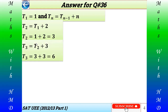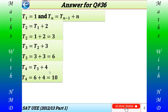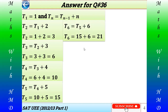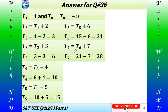T(3) = T(2) + 3 = 3 + 3 = 6. T(4) = T(3) + 4 = 6 + 4 = 10. T(5) = T(4) + 5 = 10 + 5 = 15. T(6) = T(5) + 6 = 15 + 6 = 21. T(7) = T(6) + 7 = 21 + 7 = 28.